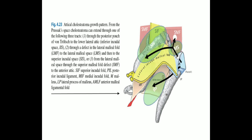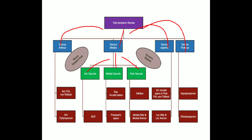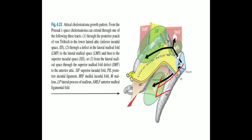There are three tracks described for the growth pattern of attic cholesteatoma. The first pathway is from the Prusak space through the posterior pouch of von Tröltsch, extending to the inferior incudal space and then to the posterior mesotympanum, becoming a posterior mesotympanic cholesteatoma. This tract correlates with the embryology of the saccus superior.